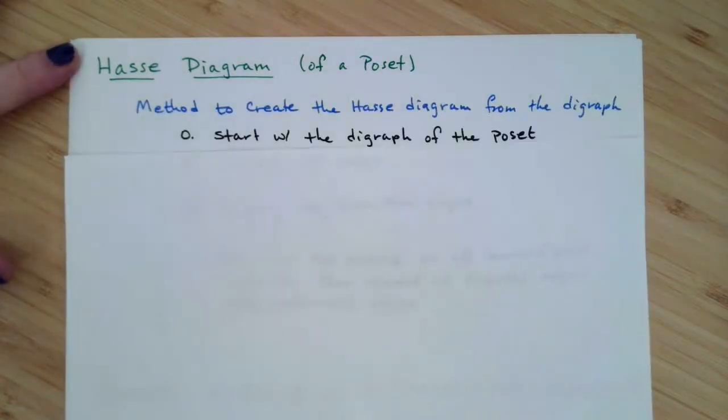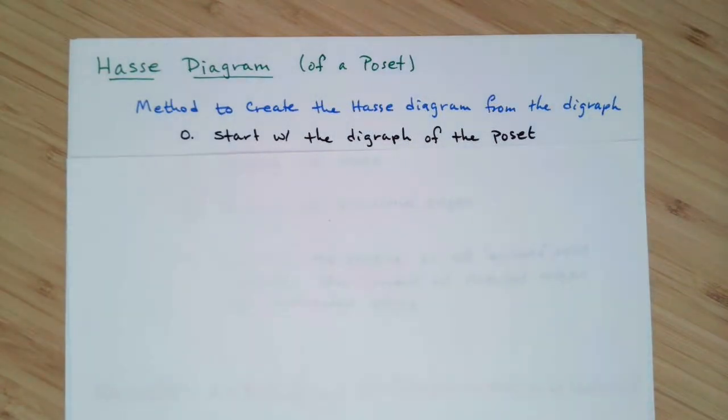First thing that you do is you want to start with the digraph of your poset, so we'll have an example that walks through each of these steps. Once you have the digraph of your poset, what you're going to do is you're going to remove all loops from the digraph.